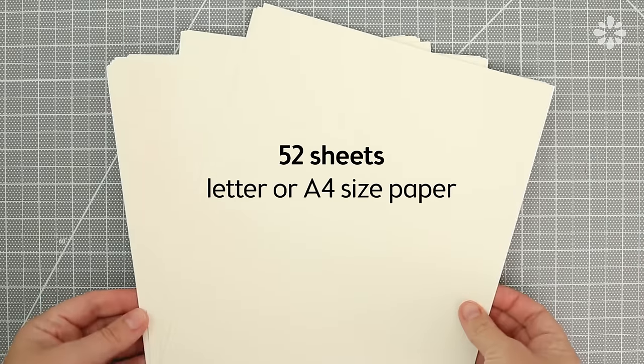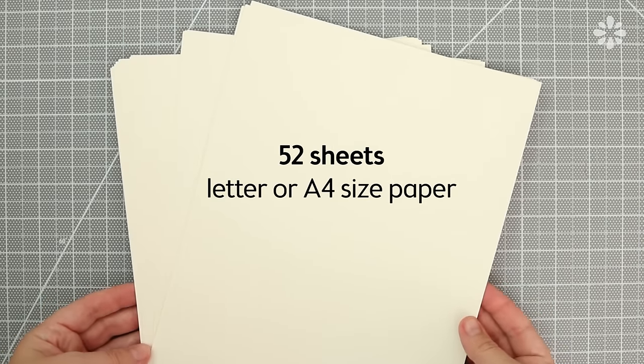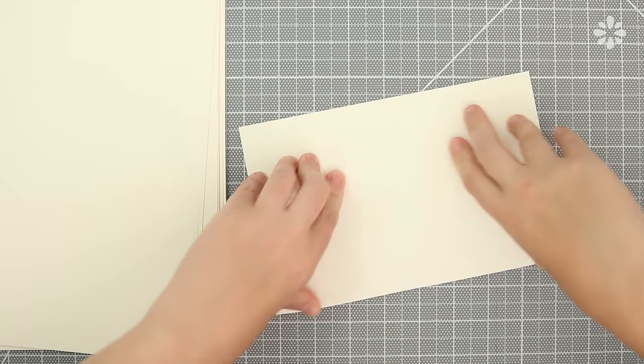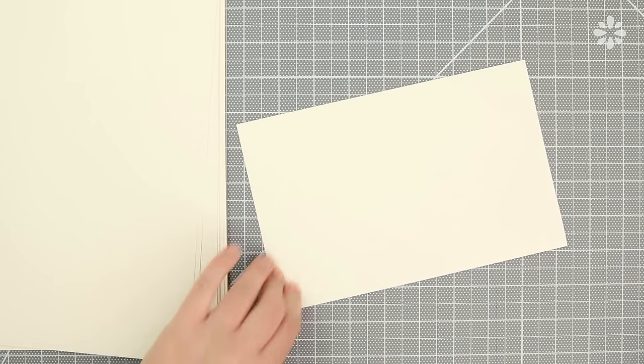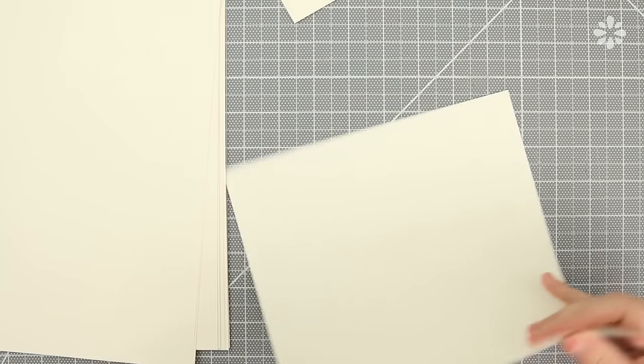For the pages, I'm using 52 sheets of this cream color, letter size paper. Fold each sheet in half, and you can run a bone folder along the folded edge so that each page lays more flat.